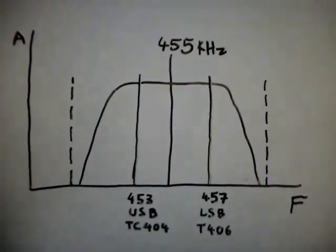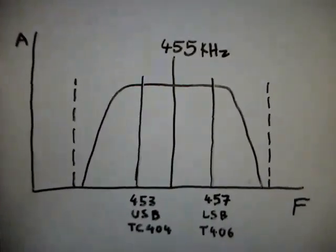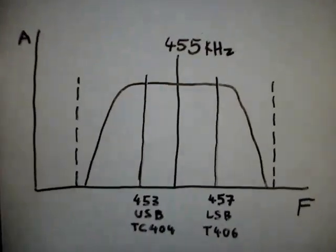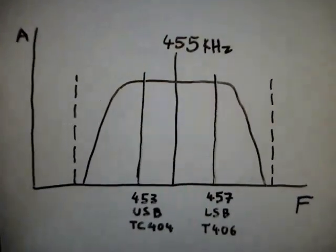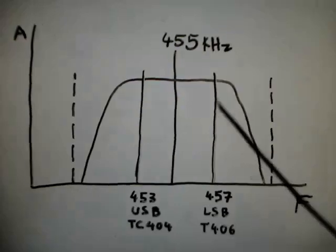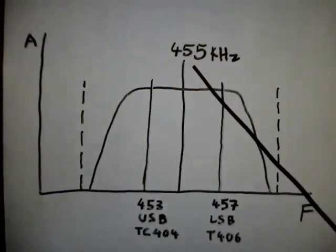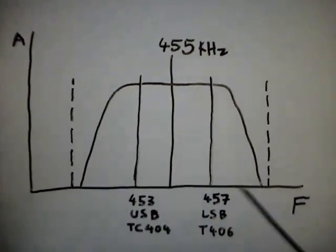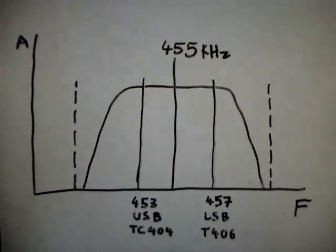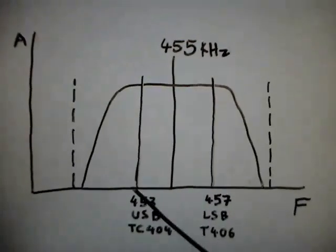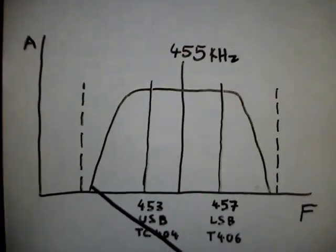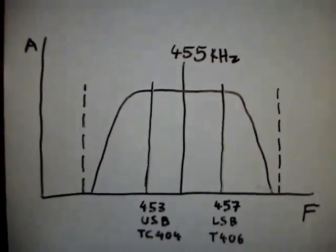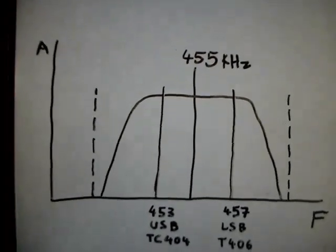To understand this better, I have drawn a quick diagram. In the vertical axis there's the amplitude, and in the horizontal axis there's the frequency, like you would see it in a spectrum analyzer. Here's our 455 kilohertz line, which should be in the center of the passband of our ceramic filter.